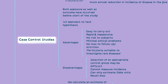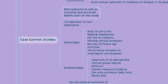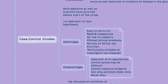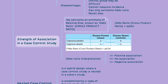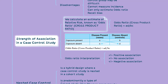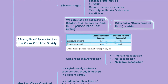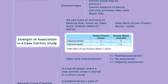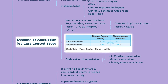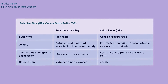The next type of study important to revise is the case-control study, in which both exposure and outcome have occurred before the start of the study. Its advantages and disadvantages are as seen in the mind map. The strength of association in a case-control study is calculated using relative risk and odds ratio. Odds ratio, or cross-product ratio, is calculated as AD divided by BC, where A, B, C, and D represent the frequency of exposure and outcome.